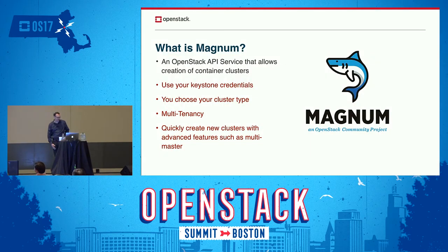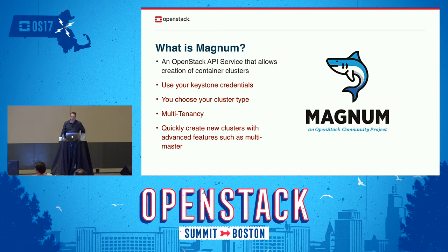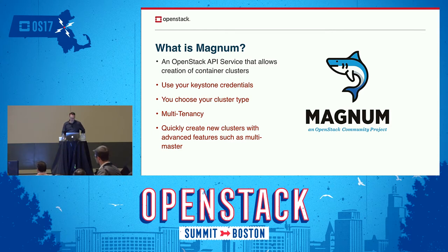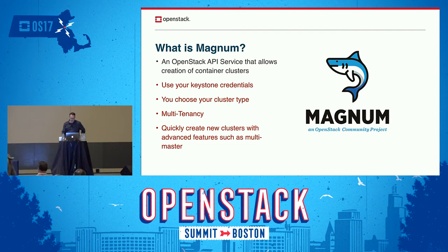Magnum is an OpenStack service that allows you to create container clusters. It lets you use the same credentials you would use to interact with your OpenStack cloud in order to create those clusters and manage them. It gives you a choice of what kind of cluster types to create, has a full multi-tenancy solution from the control plane all the way down into the data plane, and it allows you to create those clusters quickly and easily using advanced features such as multi-master.